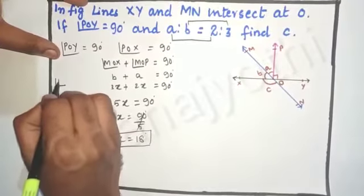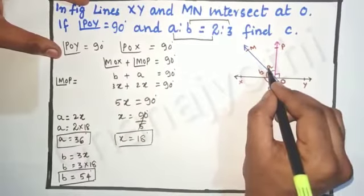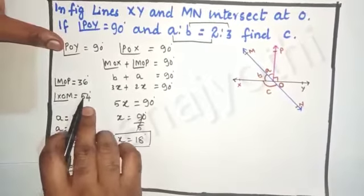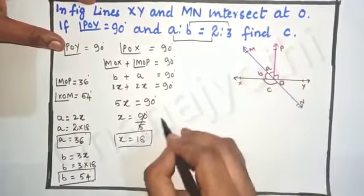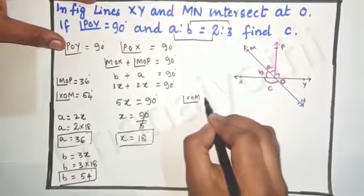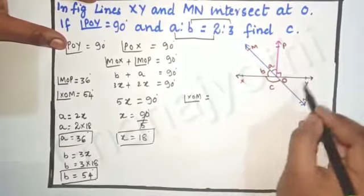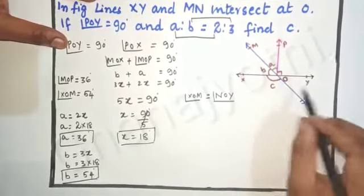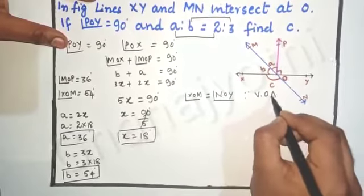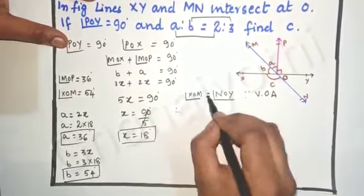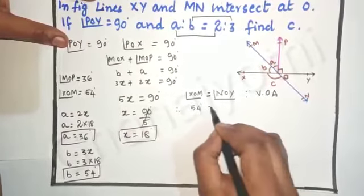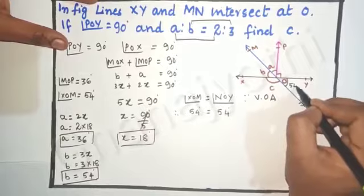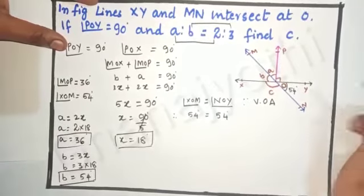So angle MOP equals a, that is 36 degrees, and angle XOM equals 54 degrees. Now, angle XOM is equal to angle NOY because they are vertically opposite angles. Therefore angle NOY is also equal to 54 degrees.